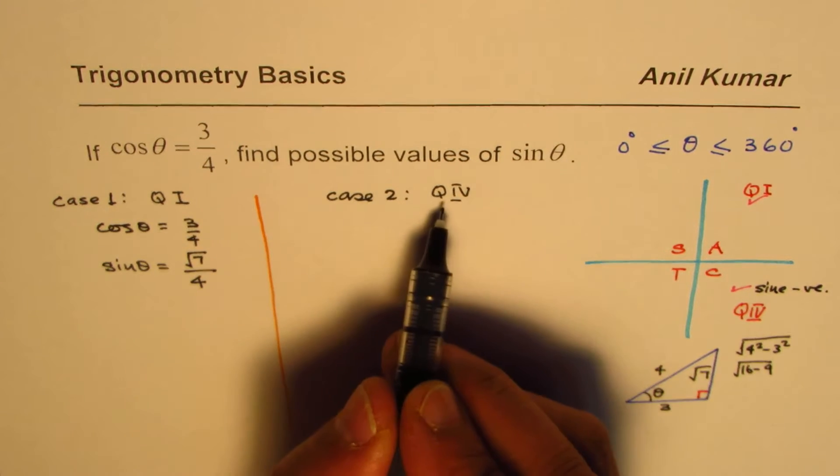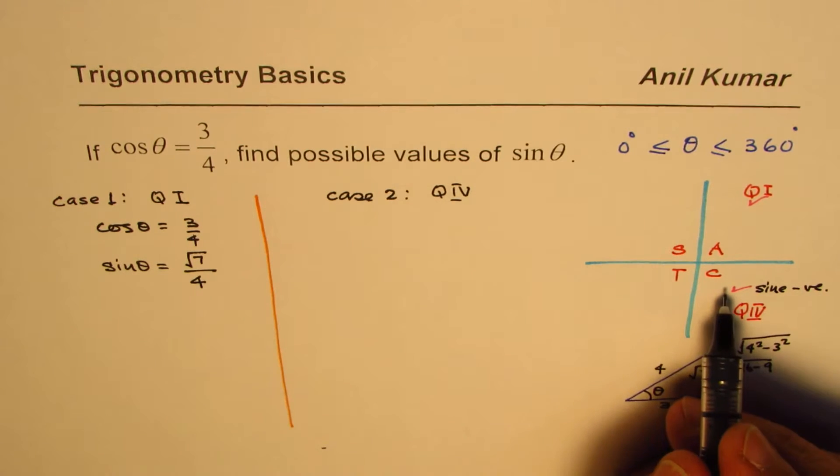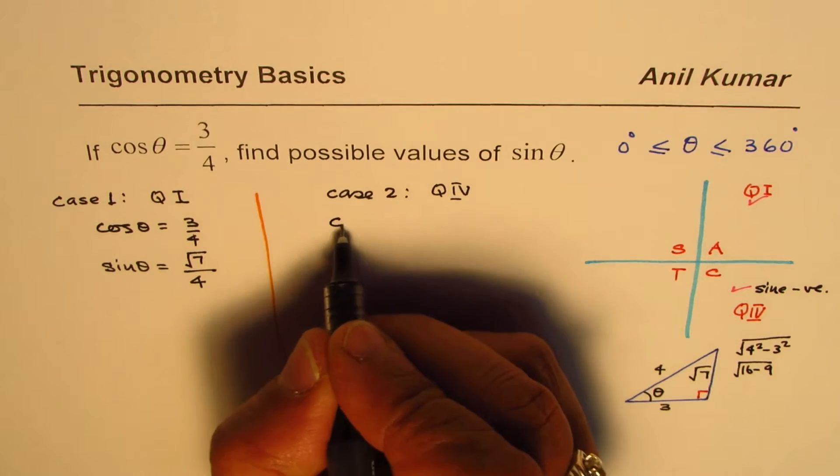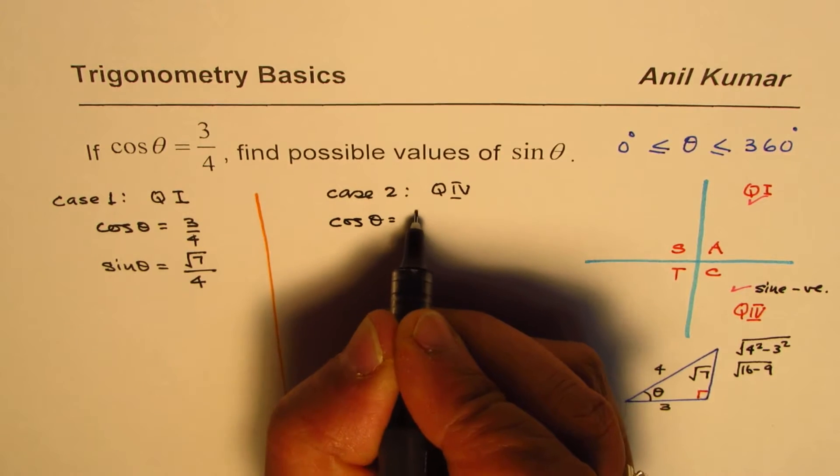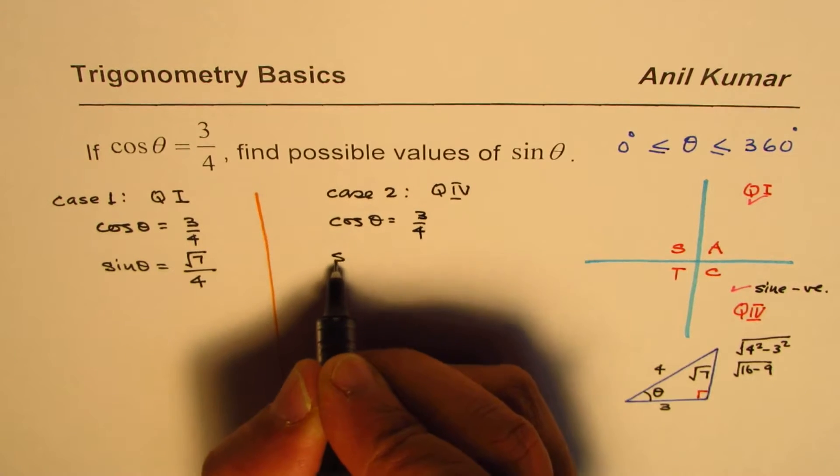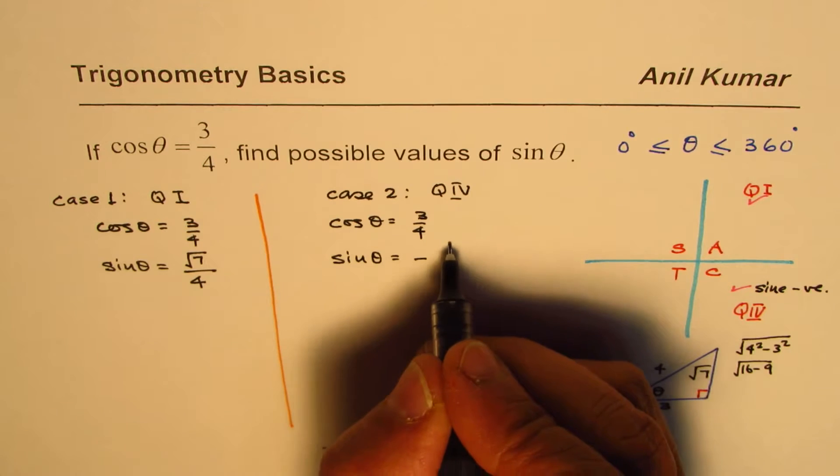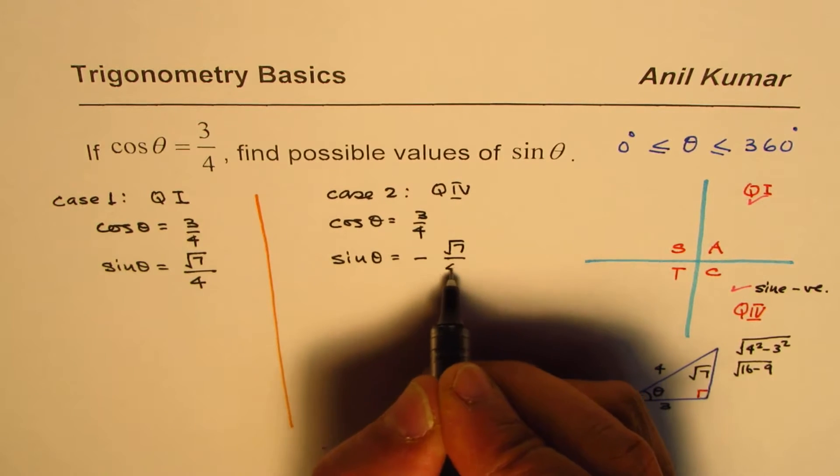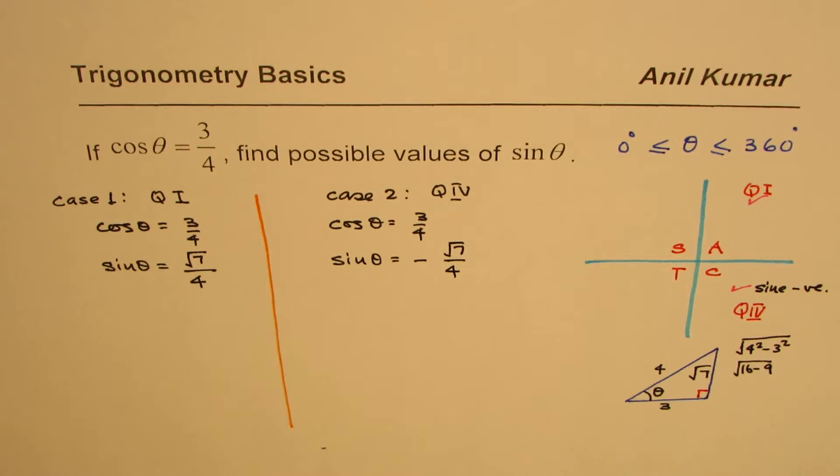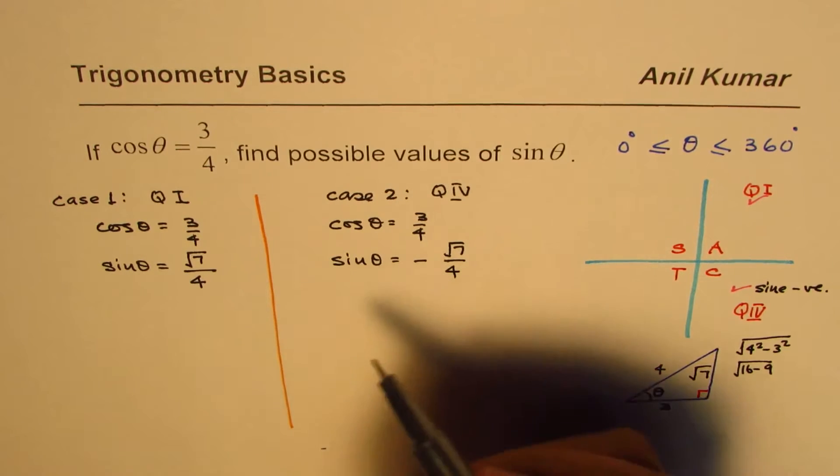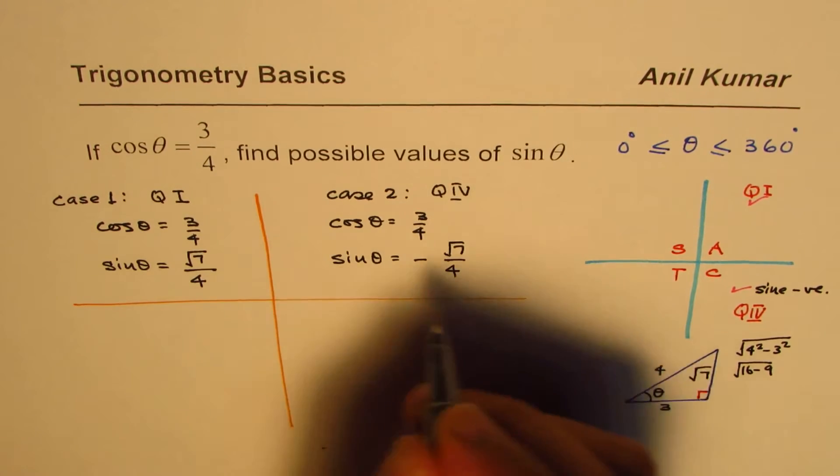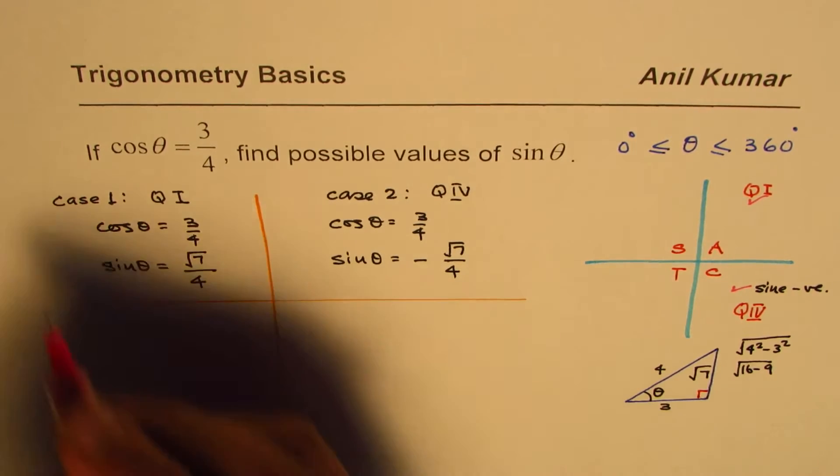However, if you are looking into quadrant 4, then sin has to be negative. So in this case when cos theta equals to 3 over 4, sin theta is actually negative square root 7 over 4. So we get definitely two solutions. Let's treat this as our method 1.